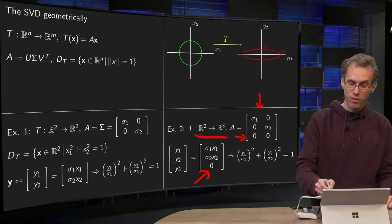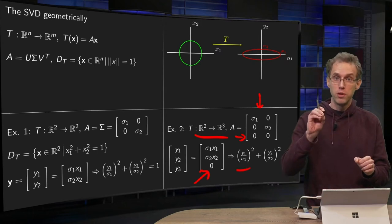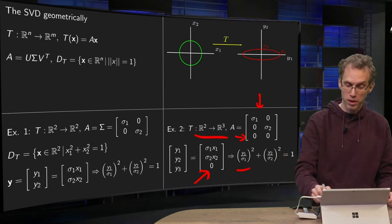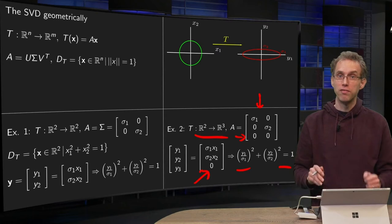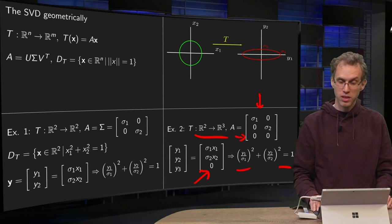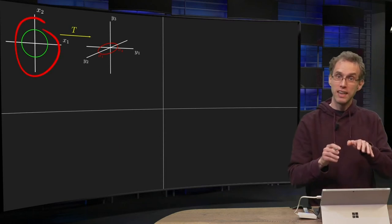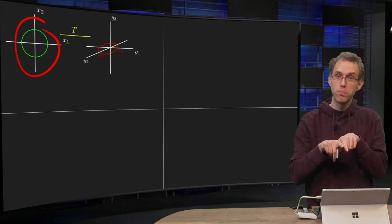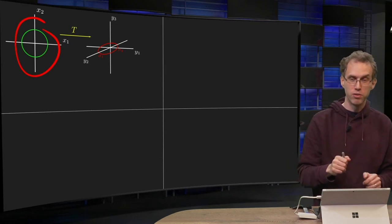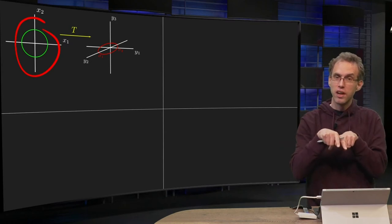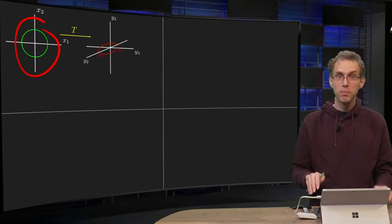So again we will have (y_1/sigma_1)^2 + (y_2/sigma_2)^2 = 1, so that's just as in the previous example, but now we also have y_3 = 0. So how does that look? Well, in that case we again start with a circle, we again get an ellipse in the y_1 y_2 plane, but now with the additional condition that y_3 = 0, so just an ellipse in the plane. So that's what we get in this 3 by 2 case.